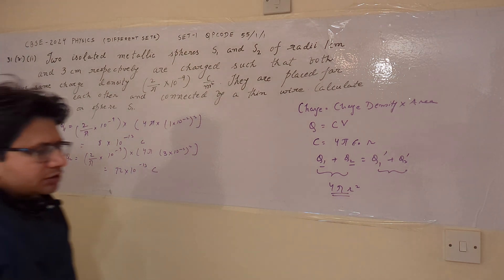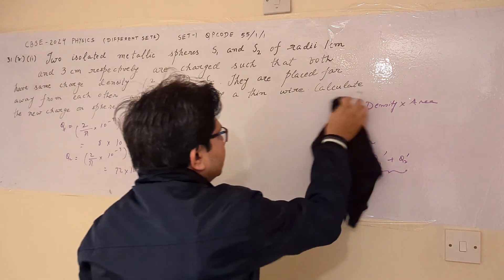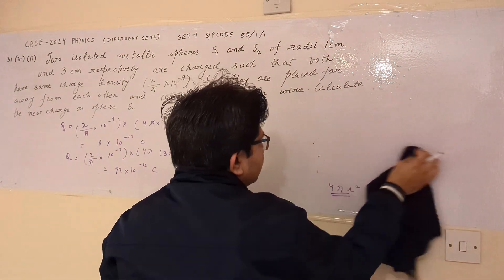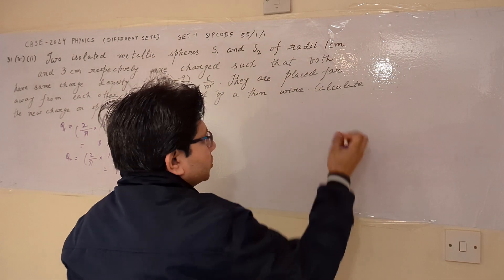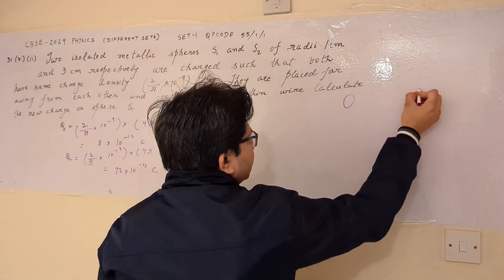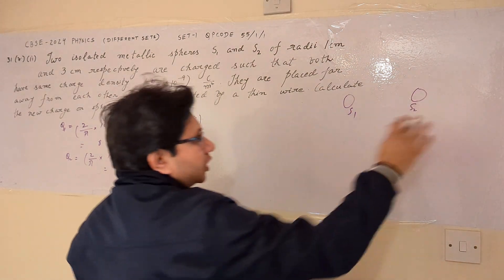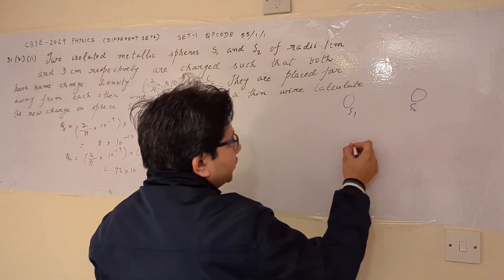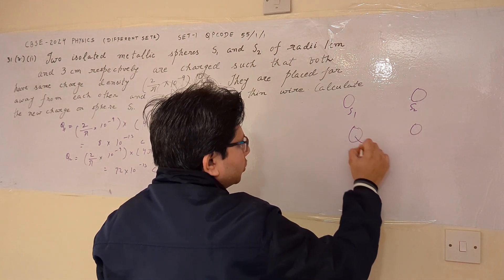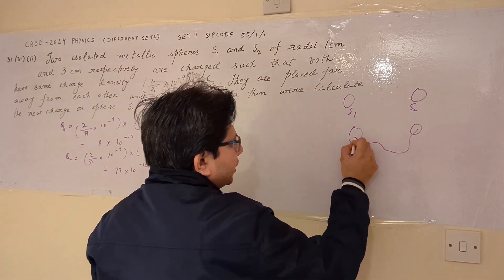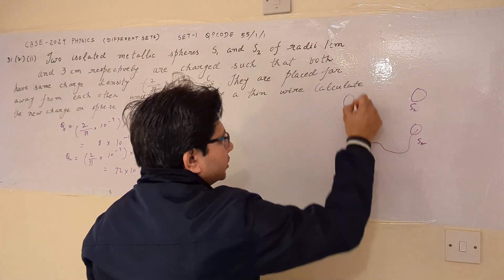These are the respective values of charges before they are connected with a thin wire. Now the spheres S1 and S2 are far apart, and after some time they are connected by a wire, and their respective charges change.